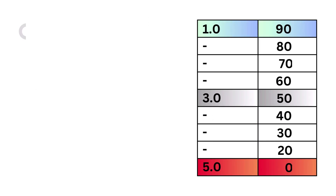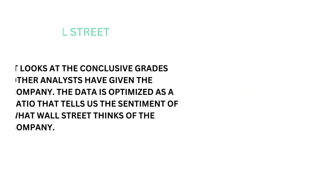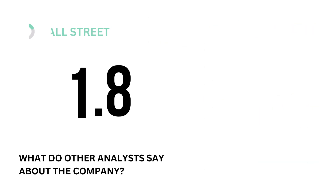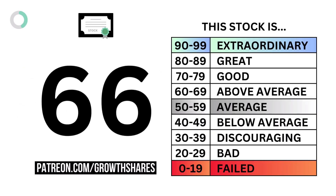Lastly in the stock factor is Wall Street. Wall Street looks at the conclusive grades other analysts have given the company. The data is optimized as a ratio that tells us the sentiment of what Wall Street thinks of the company. The models tell us that a Wall Street ratio of 3 is considered average. Here's our Wall Street grade. To recap, here are the four metric grades, and when we put them together, we get our stock grade.